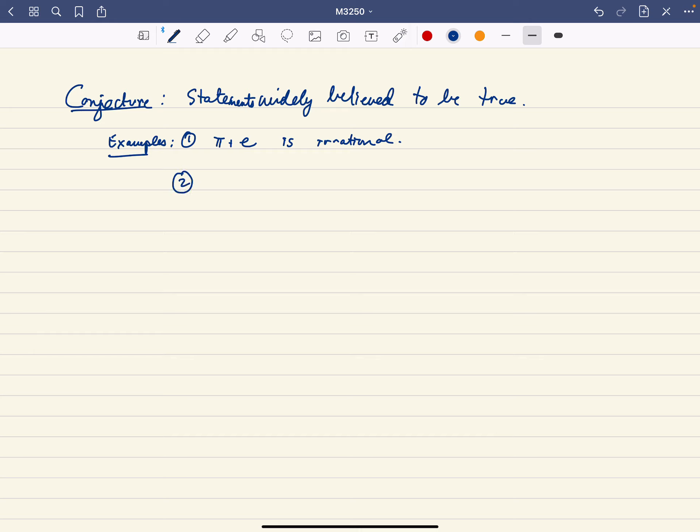Another conjecture would be that there are infinitely many primes of the form: there are infinitely many primes p such that p is equal to n² + 1 for some integer n.